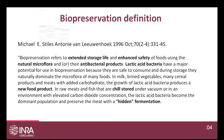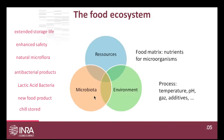In raw meat and fish stored under vacuum or elevated CO₂, lactic acid bacteria become the dominant population and preserve the meat — what Stiles called 'hidden fermentation' in 1996. Twenty years later, looking at the underlying items — extended storage life, natural microflora, antimicrobial products, lactic acid bacteria — it's clear this refers to the food ecosystem, which can be considered in three parts.